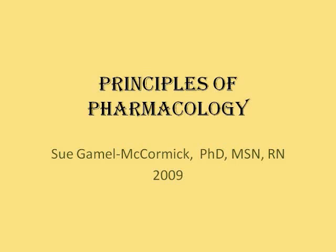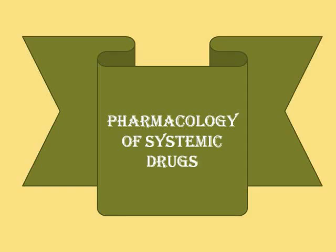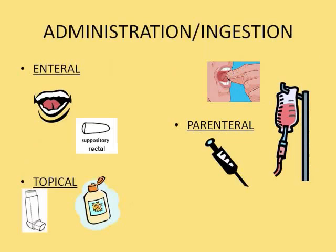In this video we're going to be talking about the pharmacology of systemic medication. Drugs can be administered or ingested by various routes. They can go in enterally, which means through the GI system — either by mouth or in some cases rectally. Some rectal suppositories have systemic action, for instance ones that are used for nausea.